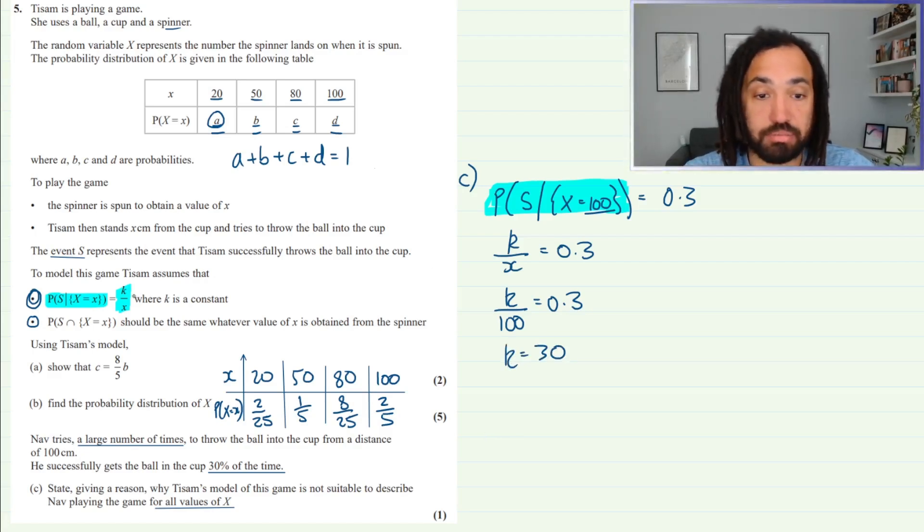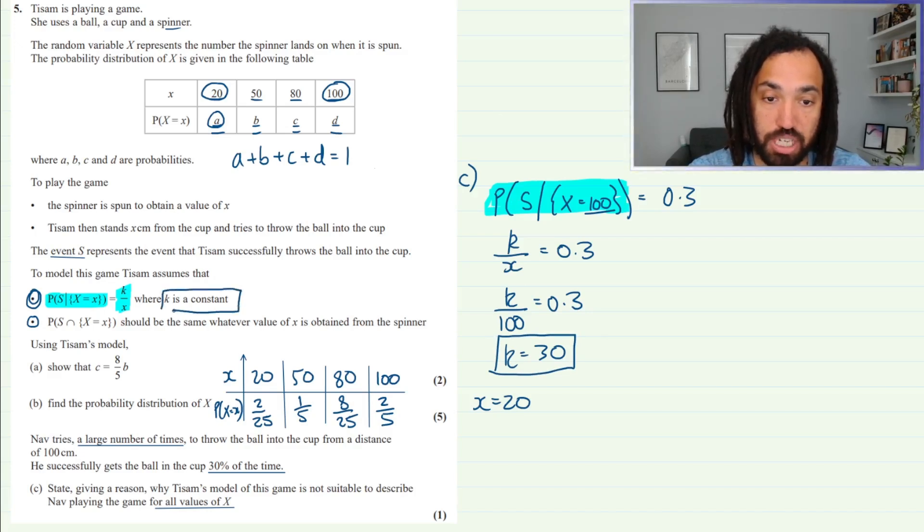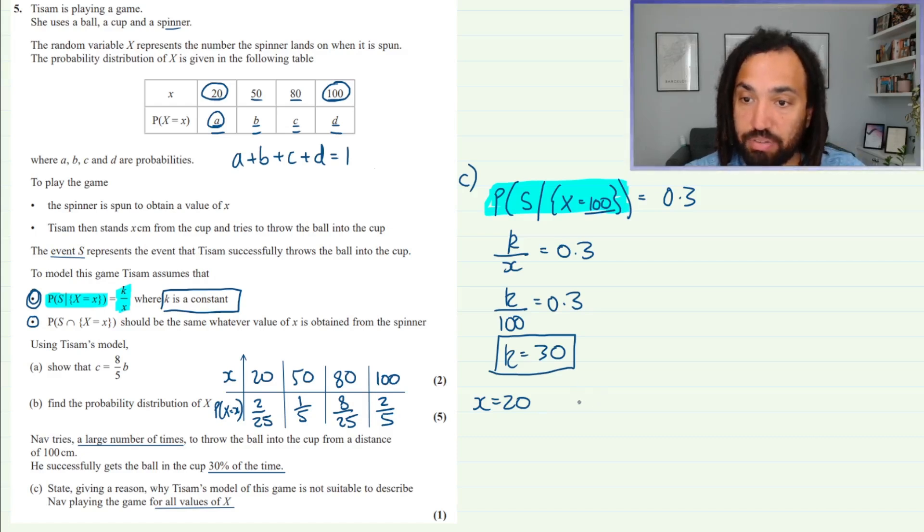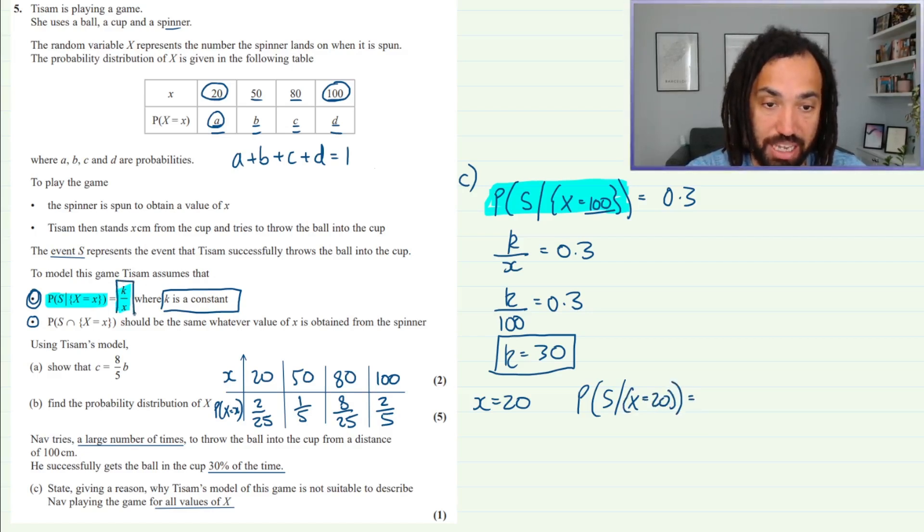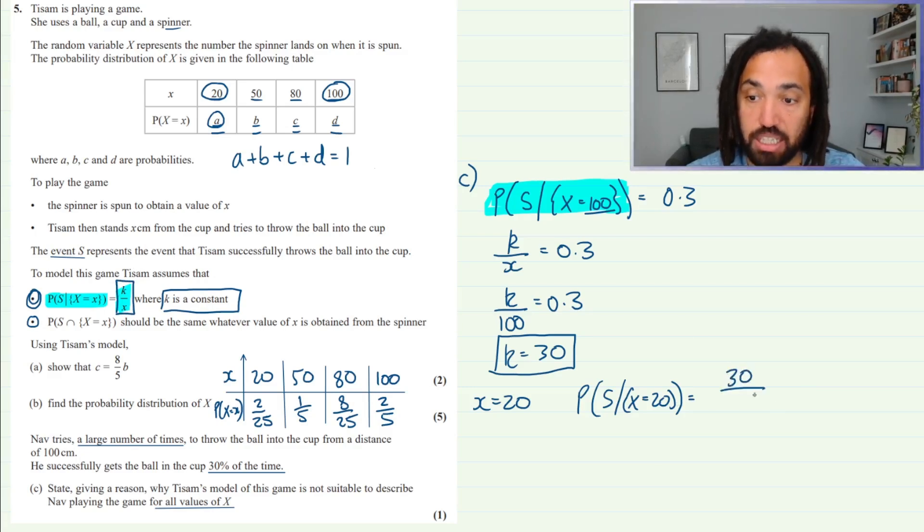Now does that work for all values of x? Because apparently it doesn't. So it worked for, or at least we've used the assumption for when x is 100, so let's try the other extreme when x is 20 and see what happens when x is equal to 20 using the k value which we're told is definitely constant so it shouldn't change. Okay, so when x is 20 we have that the probability that S given that x is 20 is equal to again same thing, it should be k over x which is 30 we know k is, over the x value this time around is 20, and that's equal to 1.5.